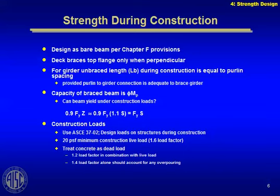The strength during construction is controlled by Chapter F provisions just like any bare steel beam. The deck braces the top flange only when it's perpendicular, as we talked about earlier. Be careful about unbraced length of girders — generally pick the unbraced length as the distance between the composite beams that frame into it, not assuming it's continuously braced unless you make special provisions during construction. The capacity of the braced beam is φM_p.